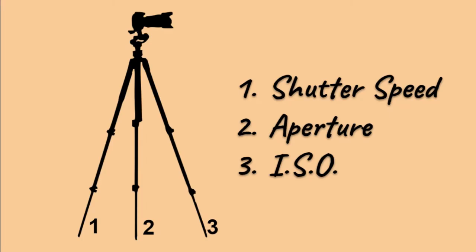Shutter speed, aperture, and ISO can be thought of as the three pillars of photography. They simply are three different mechanisms in your camera to control the amount of light entering it.